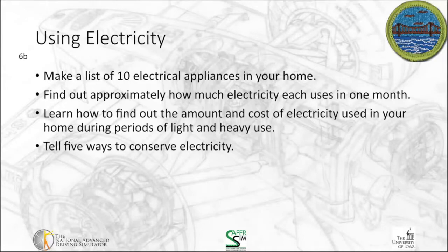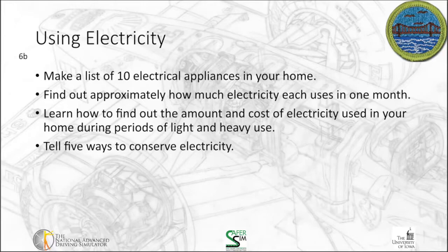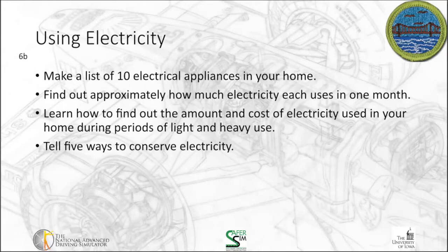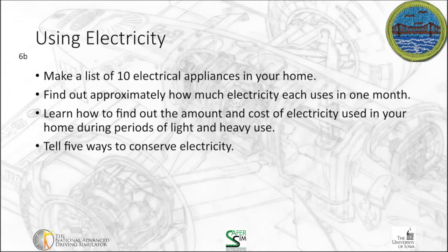The second option is using electricity. For this one, you're going to make a list of 10 electrical appliances in your home — your refrigerator, stove, washer, dryer, air conditioner, blender, radio, TV — there are countless things in your house that use electricity. You're going to find out approximately how much electricity each uses in one month. If you still have product documentation, you may be able to look that up. If you've got a smart home, you might be able to look up data directly from your electrical grid and track which outlets are using which amount of electricity. You might also ask your parents if you've got recent electrical bills so you can understand the overall power being consumed in your house.